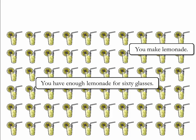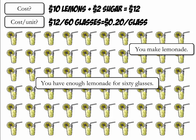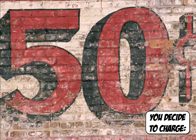You have to get to work now. You make lemonade from your raw materials — you have enough to make lemonade for 60 glasses, using all your inventory. What is our cost of production? $12. What is the per unit cost of production? $12 divided by 60 glasses is $0.20 per glass. You think a price of $0.50 per glass will be low enough to create demand while still allowing you to cover your costs and make a profit.